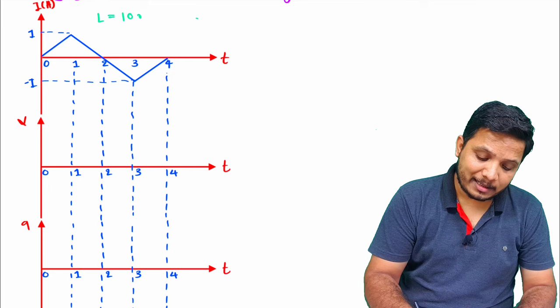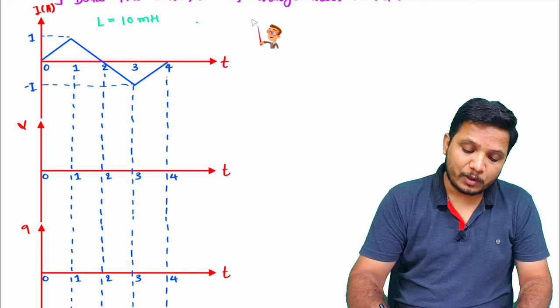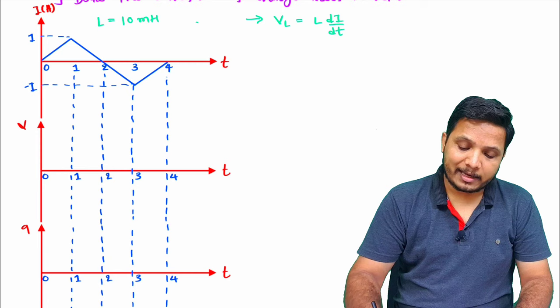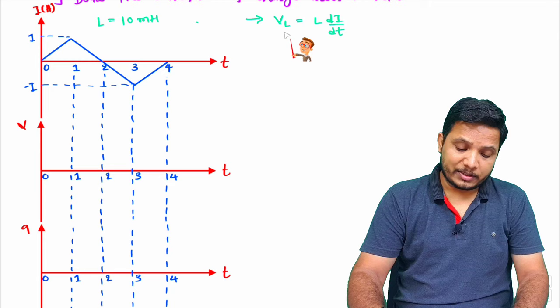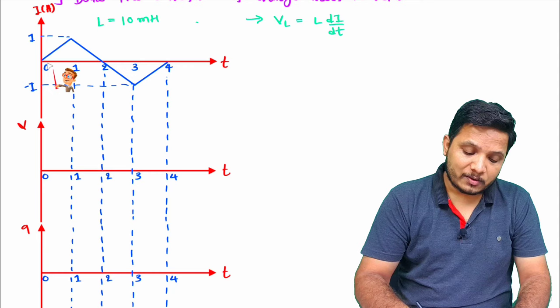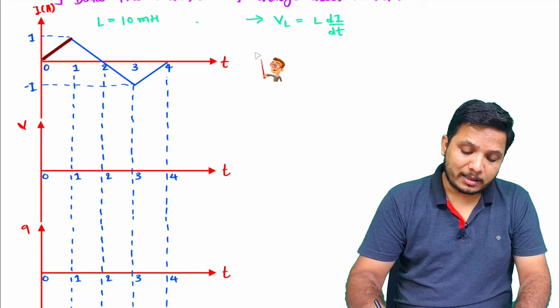We are given inductance L equal to 10 millihenry. Whenever we are given a current waveform, we can easily calculate voltage for inductance using VL = L·di/dt. We need to calculate voltage for each line segment in the current waveform. The first section runs from 0 to 1 second.